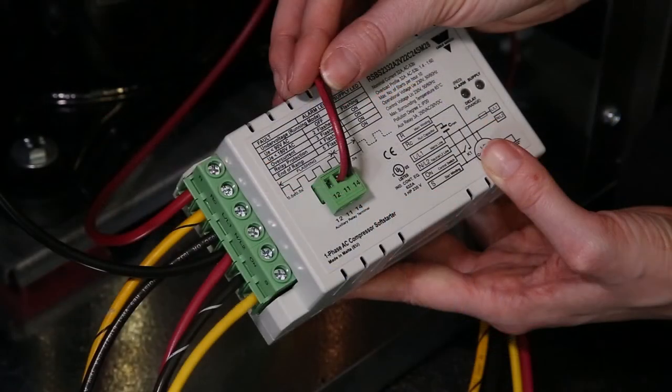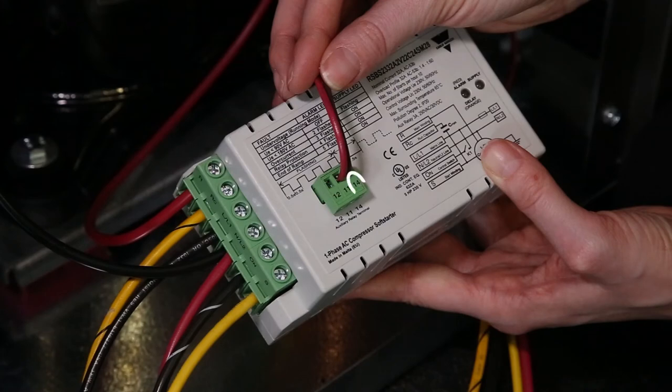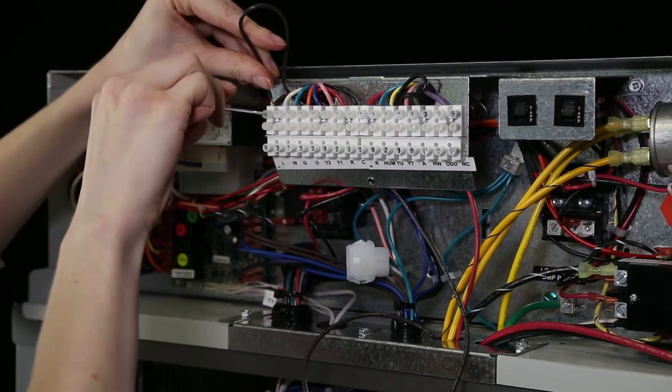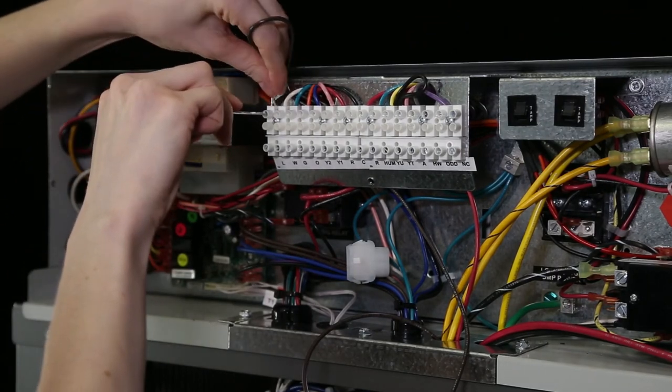Connect one end of the brown 18 gauge wire to terminal 14 on the auxiliary relay connector on the soft start module and the other end to the L terminal on the thermostat terminal strip in the control box.